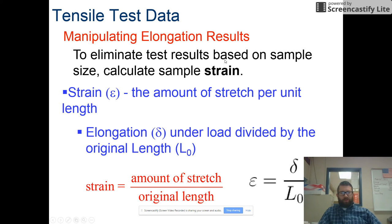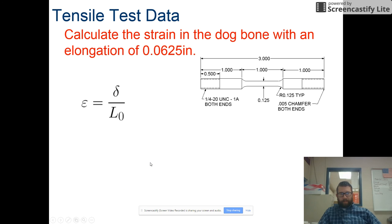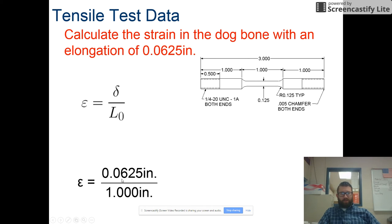To also eliminate size-based variation, we calculate strain — elongation under load divided by the original length. It's the amount of stretch divided by how long the sample was before the load was applied. For the dog bone, we take the elongation of 0.0625 inches divided by the original length of one inch, giving a strain of 0.0625.